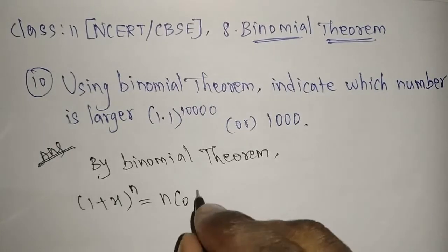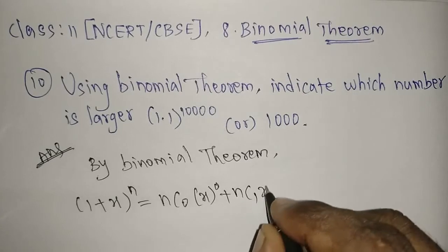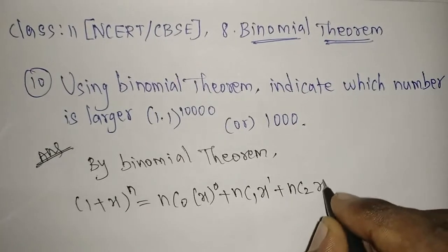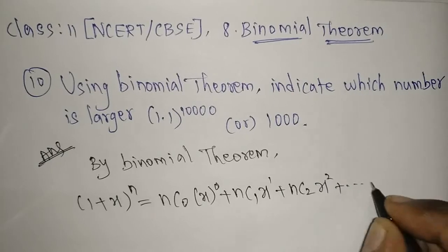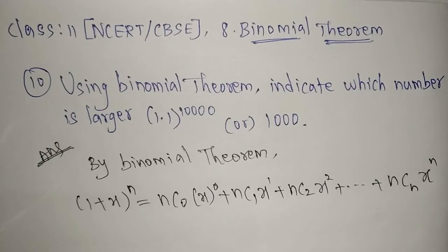Now this one, I'm taking (1.1)^10000. So the value of n is 10000. First of all, I'm going to write this as (1 + 0.1)^10000. Here n is 10000 and x value is 0.1. We need to substitute in the formula.